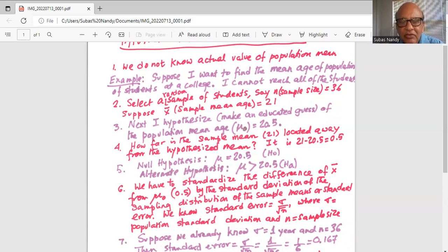Hence, we reject H0 and we say at alpha equal to 0.05, there is enough evidence to support the alternate that mu is greater than 20.5.